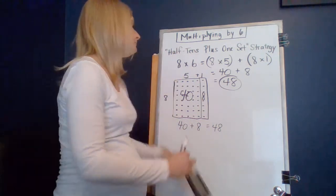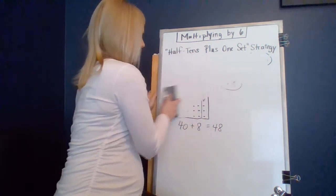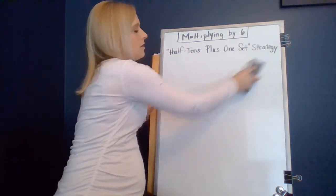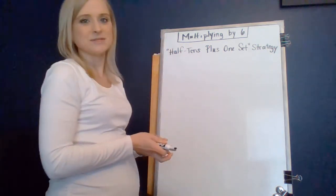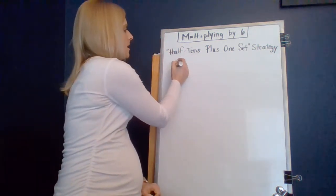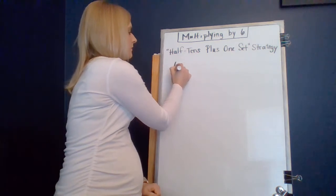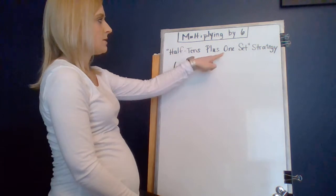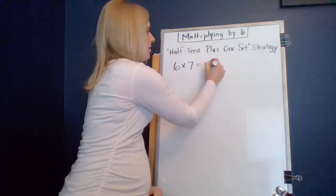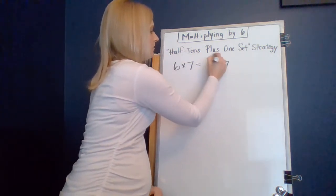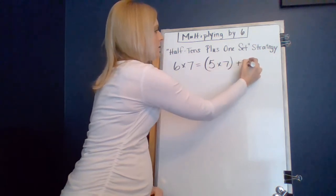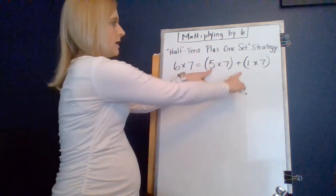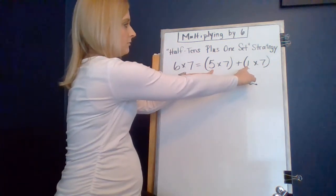Really cool strategy. Let me show you one more. What's another problem that lots of kids face? I guess 6 times 7 is another issue that sometimes kids face. So, if we were trying to find 6 times 7, we could use this half tens plus 1 set strategy and think of that as 5 times 7 plus 1 more set of 7, so that we have that 6 times 7.